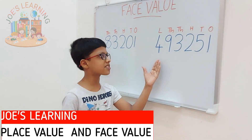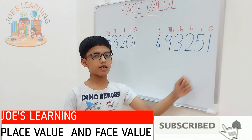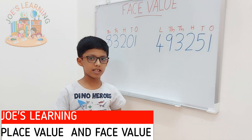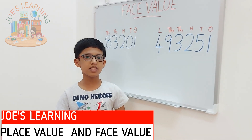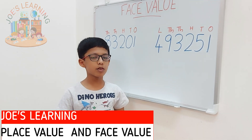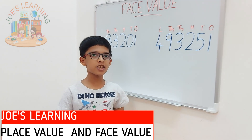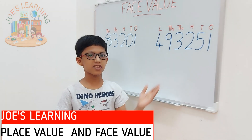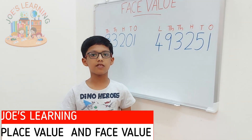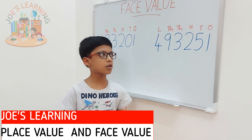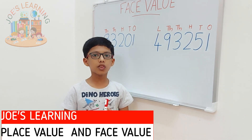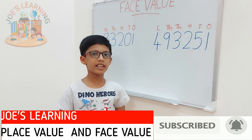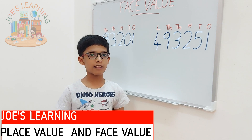Now, let us move on to the next example. In this example, which number is in the ones place? 1 is in the ones place. So, 1's face value will be 1. Now, let's move on to the tens place. 5 is in the tens place, so 5's face value will be 5 itself. 2 is in the hundreds place, so 2's face value will be 2 itself. 3 is in the thousands place, so 3's face value will be 3 itself. 9 is in the ten thousands place, so 9's face value will be 9 itself.